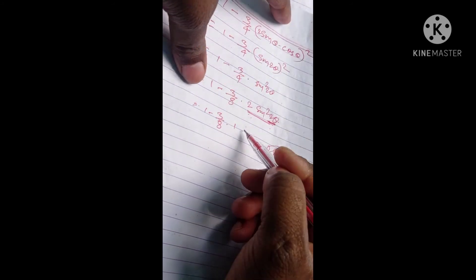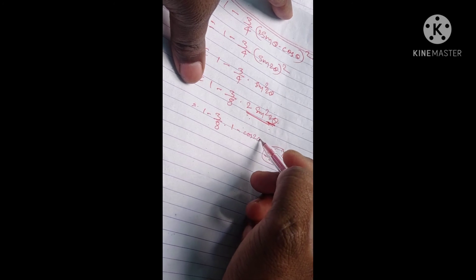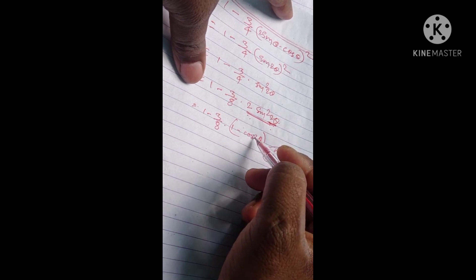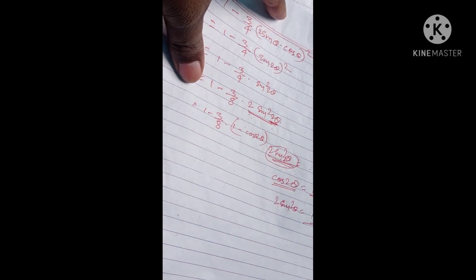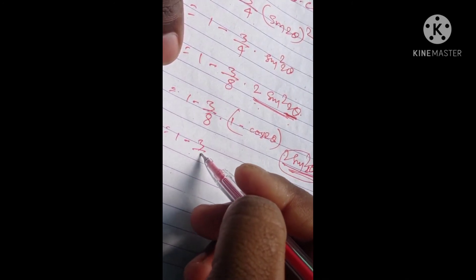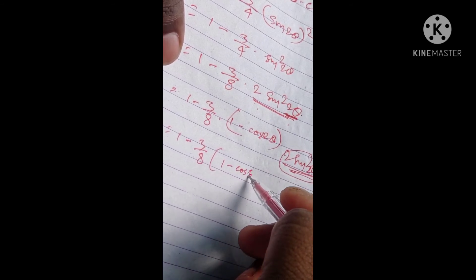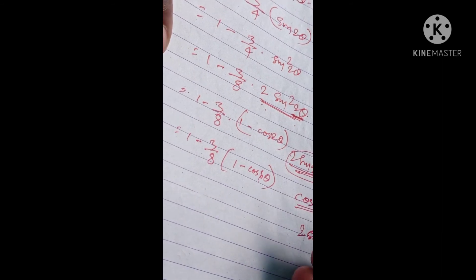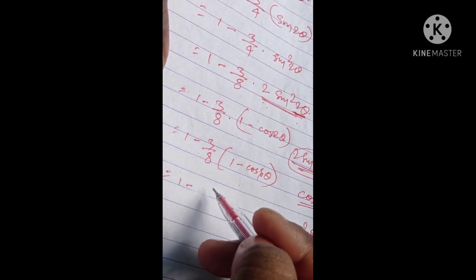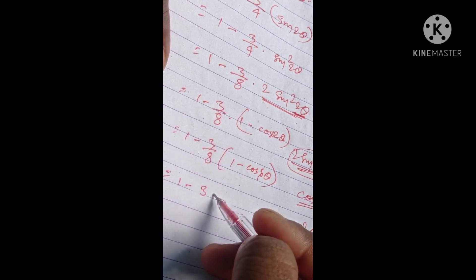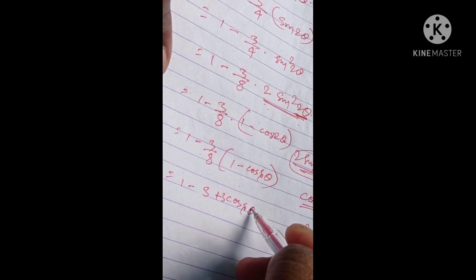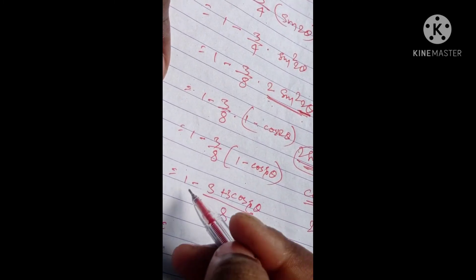Using cos2θ identity, replacing with 1 minus cos4θ: the expression becomes 1 minus 3/8 times (1 minus cos4θ). Expanding: 1 minus 3/8 plus 3cos4θ/8.